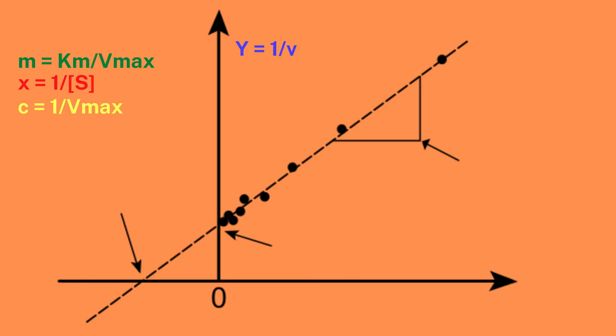So 1 over v is now going to be the y-axis, Km over Vmax is going to be the gradient of the slope, 1 over [S] is the x-axis, and 1 over Vmax is the y-intercept. Finally, minus 1 over Km is going to be the x-intercept.